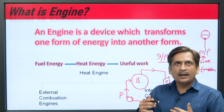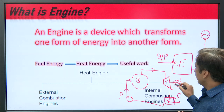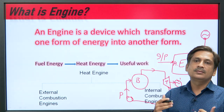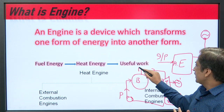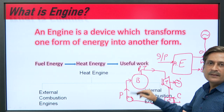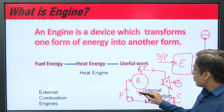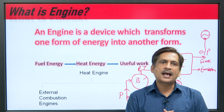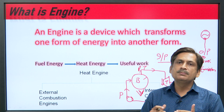In a steam power plant, you are getting useful work. In the boiler, you have steam which is expanded — here pressure and temperature rise, then expansion occurs, then it is condensed again and circulated in the plant. The combustion takes place outside the system; that is why it is called an external combustion engine or external combustion steam power plant.